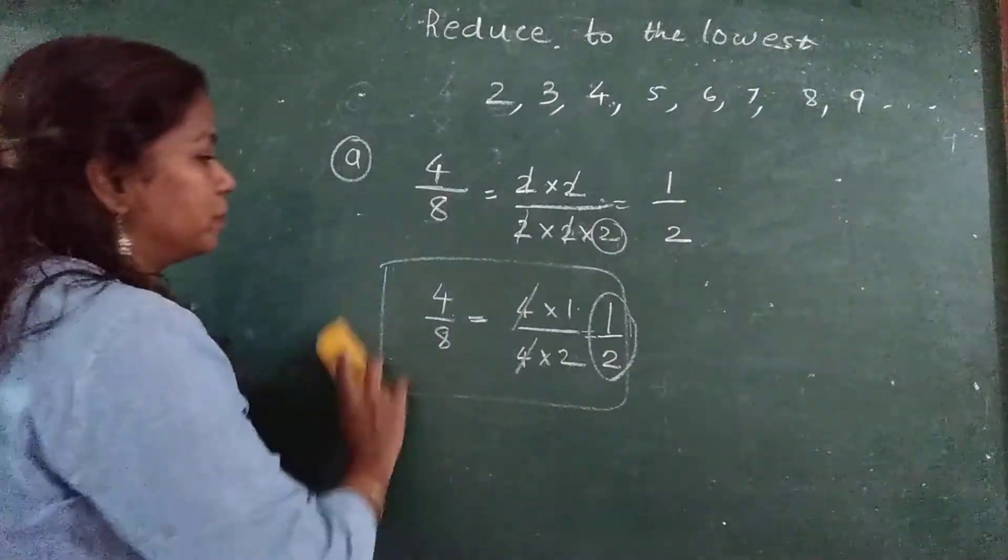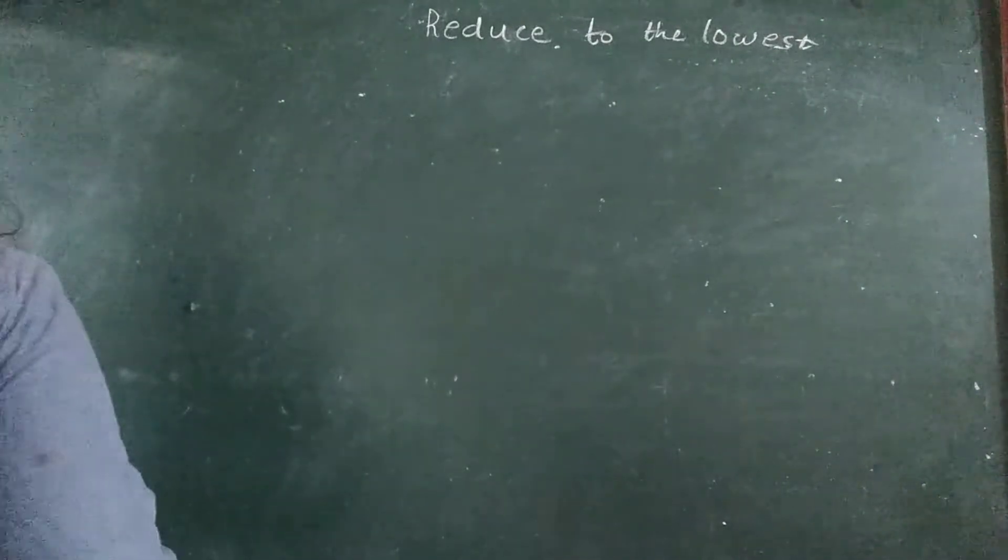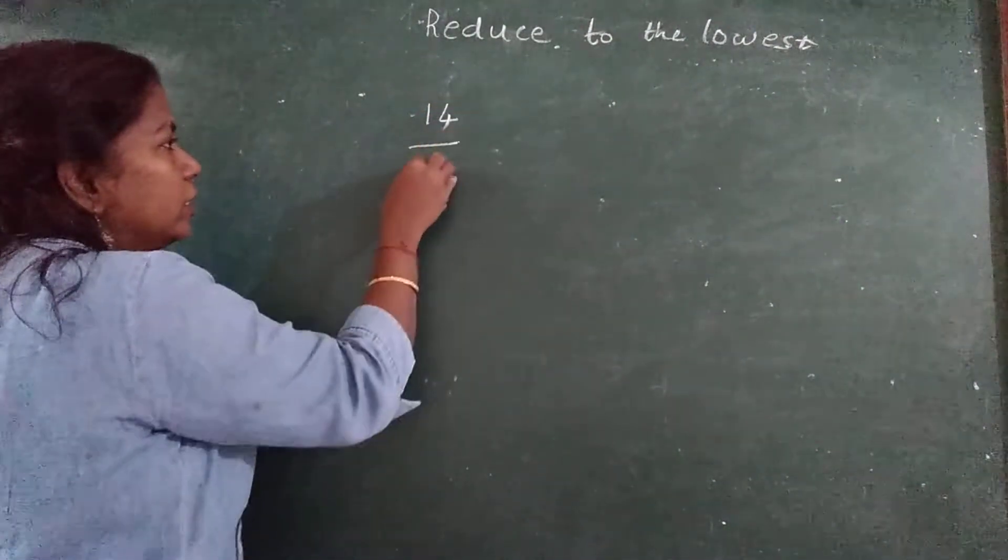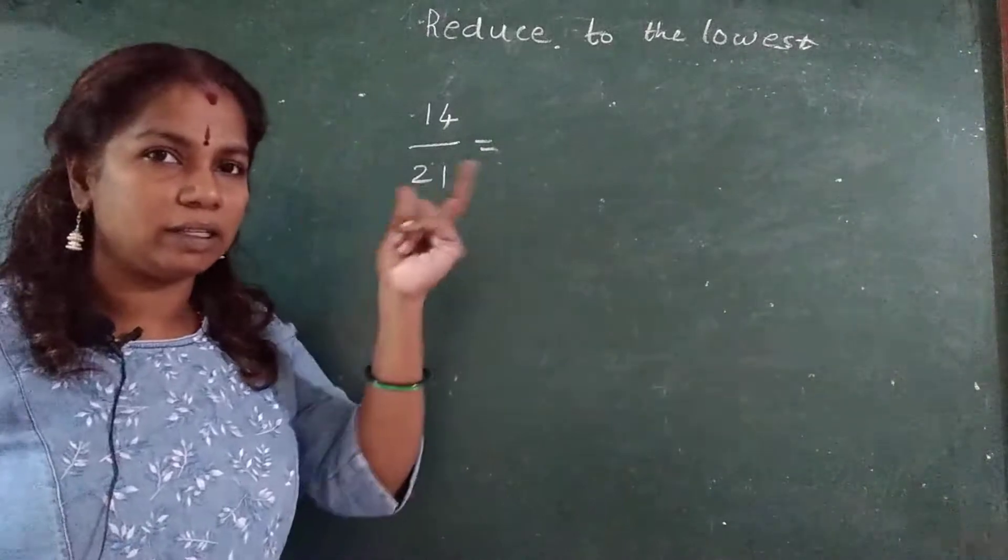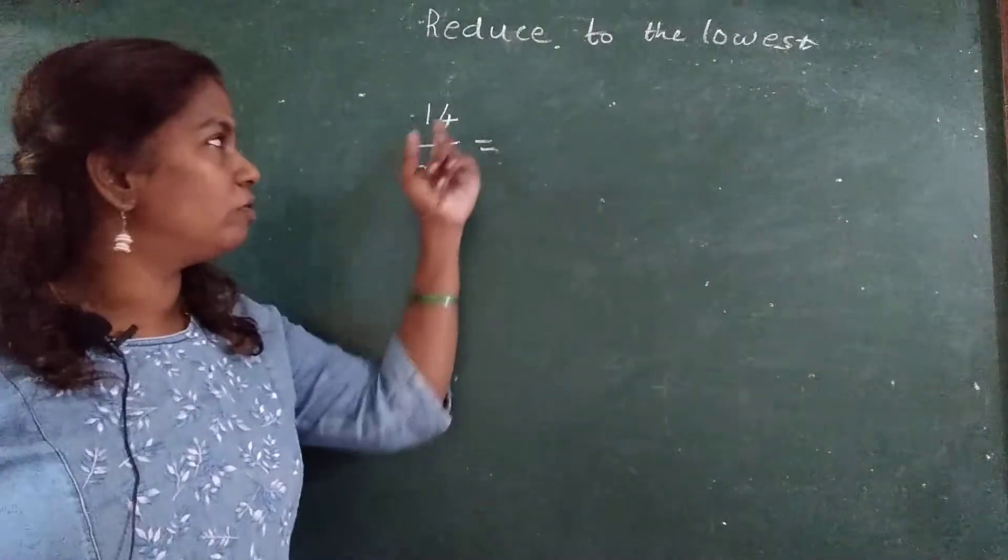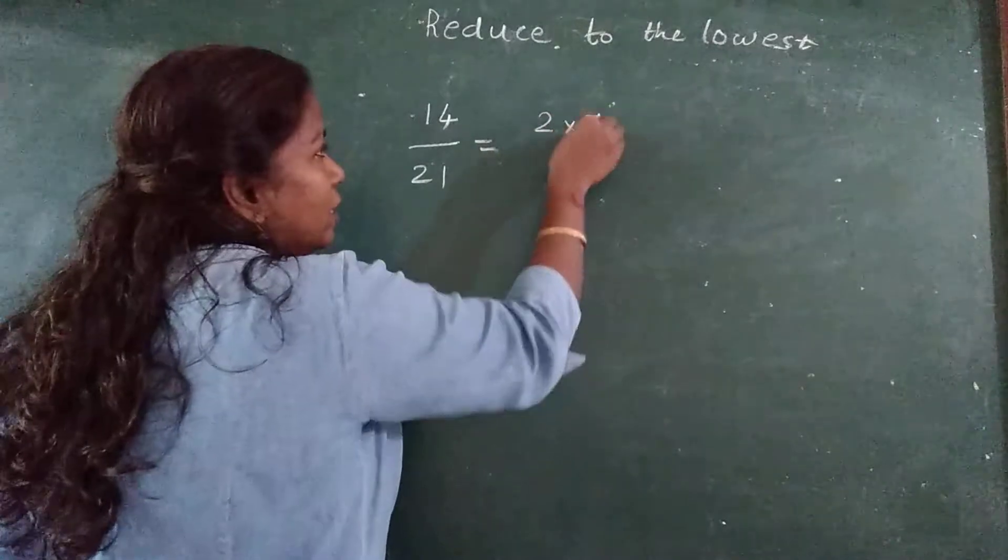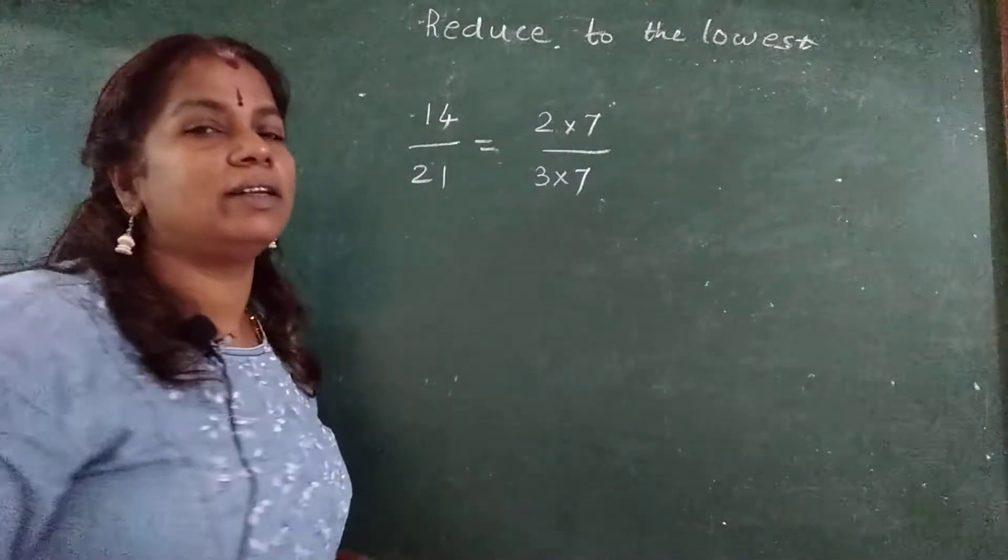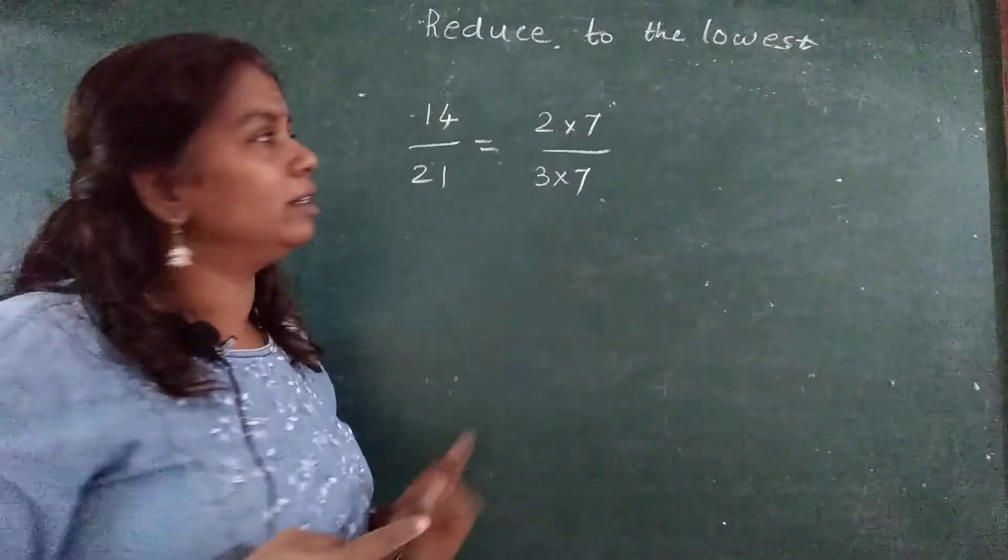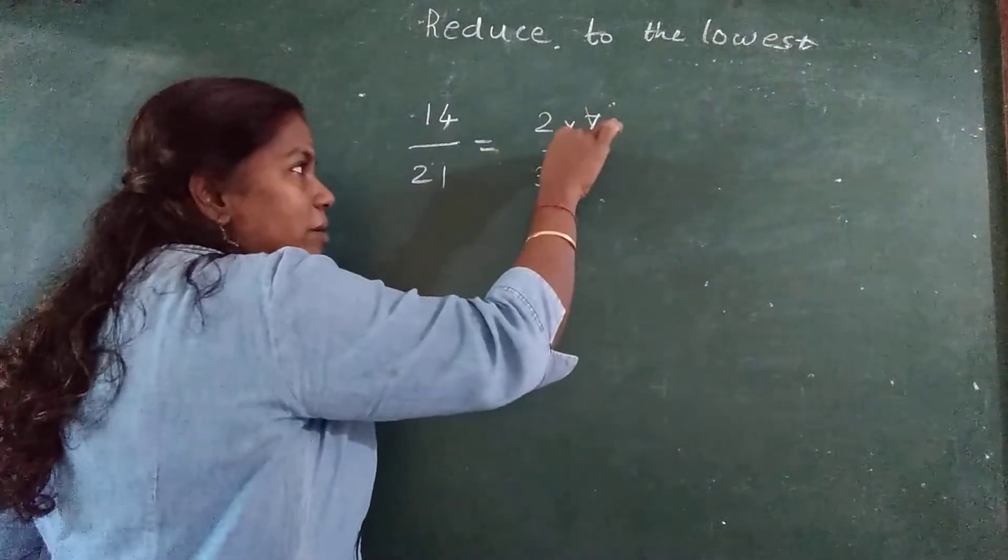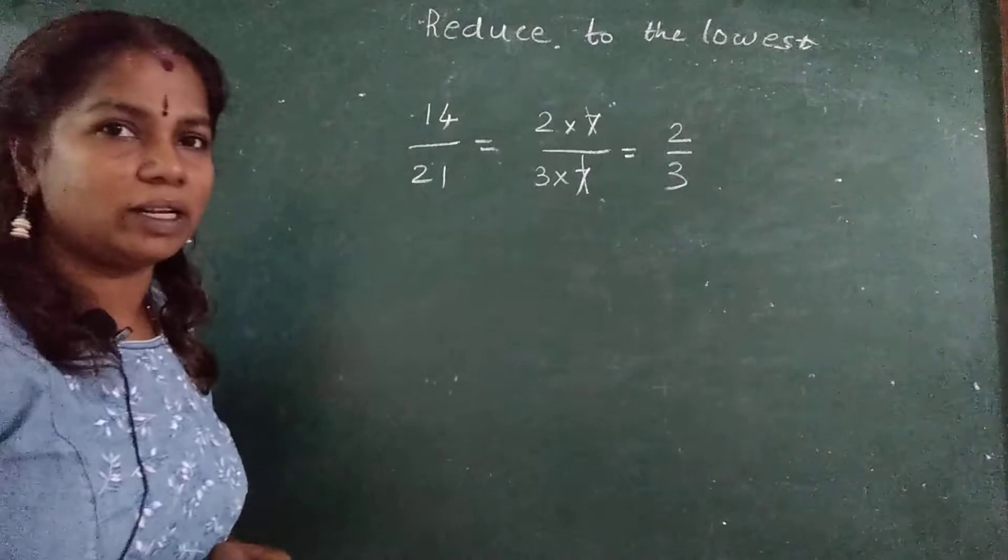Another example I will give you. 14 upon 21. When you see the number 14 and 21, there should be click click in your mind. What? 14 and 21, which number is common to them? 7. 2 sevens are 14 and 3 sevens are 21. When you see the number automatically you should think which is common to that. Then you can split in this manner. Now same same number, that is 7, 7 gets cancelled. 2 upon 3.